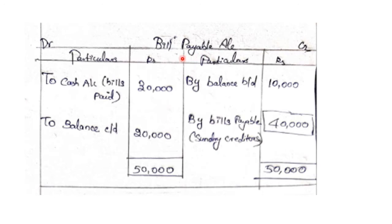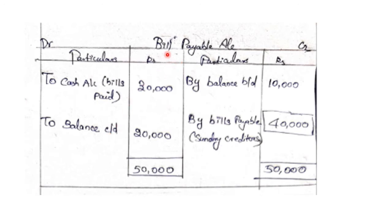Bills Payable Account: the opening balance is on the credit side. The closing balance is also on the credit side. By cash account — payment against bills payable $30,000.